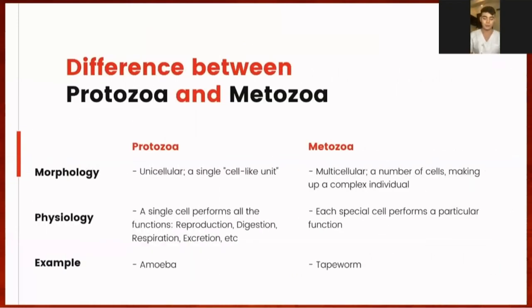Another group of eukaryotes comparable to Protozoans are the metazoans or the multicellular animals. For morphology, Protozoans are unicellular; therefore, a single cell must assume all biological functions. In contrast, metazoans, which are multicellular, consist of a number of cells that make up the complex individual. For physiology, Protozoans consist of a single cell that performs all functions including reproduction, digestion, respiration, excretion, etc., whereas for metazoans, each specialized cell performs a particular function.